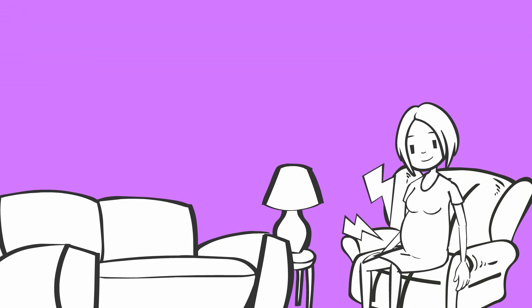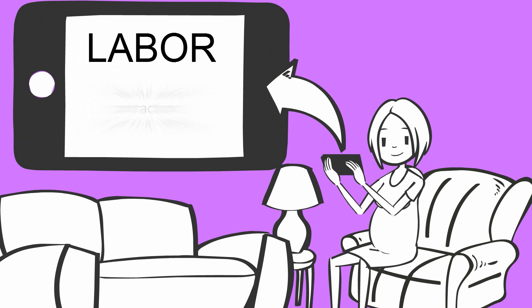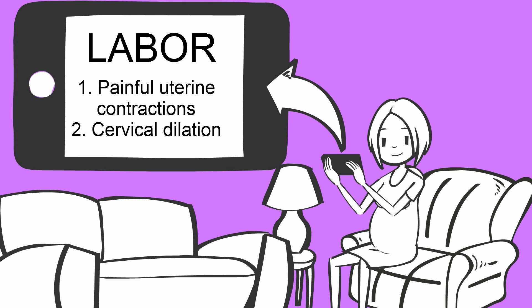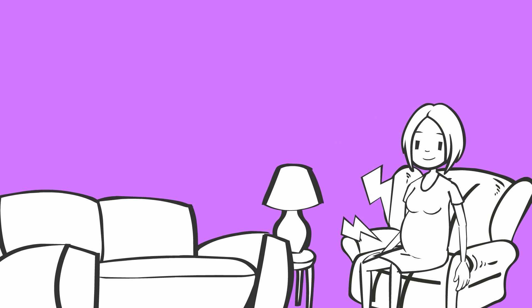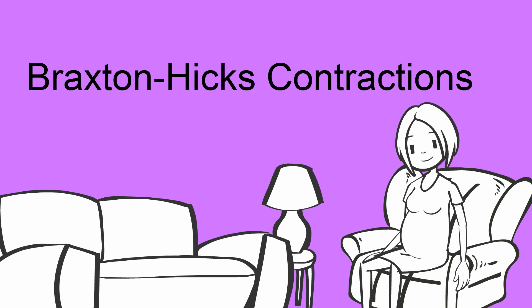Lavora is at home feeling contractions and she's not sure if she's in true or false labor. The definition of labor requires that two things occur: number one, painful uterine contractions, and number two, cervical dilation. At term, many women will feel spontaneous contractions, which they describe as tightening of the uterus. If they are not causing cervical dilation, then they are referred to as Braxton Hicks contractions.